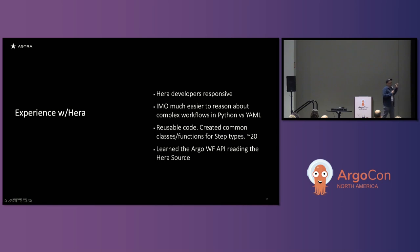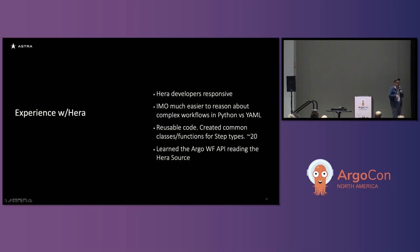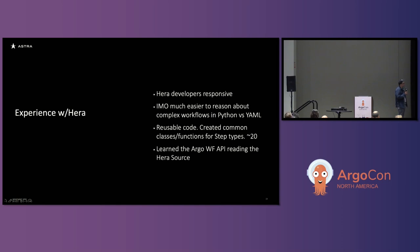Considering how few people raised their hands for Hera at the beginning of the talk, if there's one thing you walk away with: if you're using Argo, I would definitely check out Hera. I felt like it made implementing this project way easier. I actually kind of learned the Argo Workflows API through the Hera codebase — when I was trying to figure out how to do things, I'd just read through the Hera code, because Hera maps all of the Argo resources into Python code. I could jump into their code, look at it, and see how things worked — I felt like it was actually better than reading documentation. It's a lot easier to reason about complex workflows in Python versus YAML.